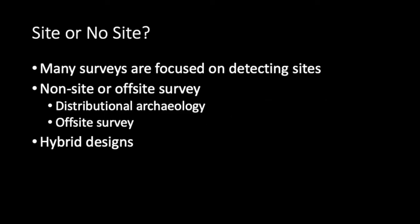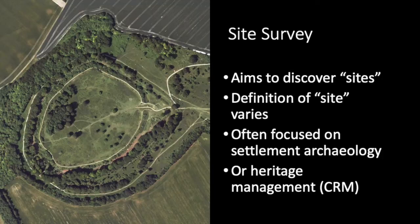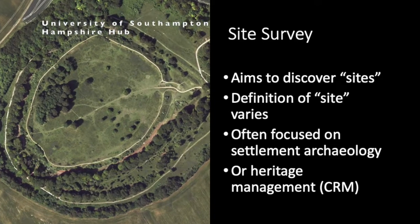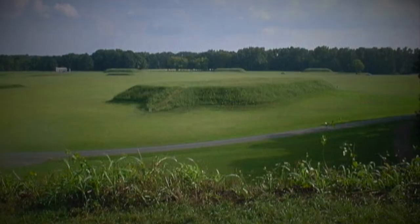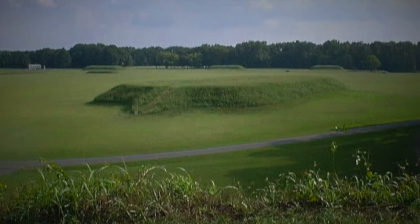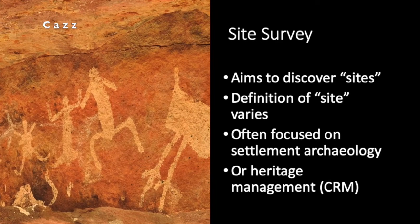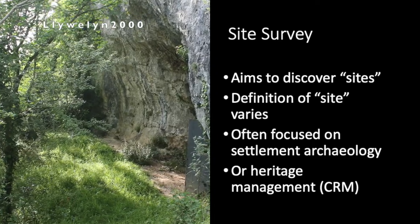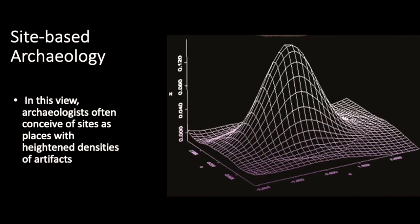In many surveys, the target of interest is called a site. Sites can be the remnants of settlements, like villages and campsites. They can also be cemeteries or monuments, or cliff faces or boulders with rock art, and they can also be caves. In many archaeological surveys, sites are just areas with elevated densities of artifacts, which might mark the location of some of the site types previously mentioned, but could also occur for a variety of other reasons.